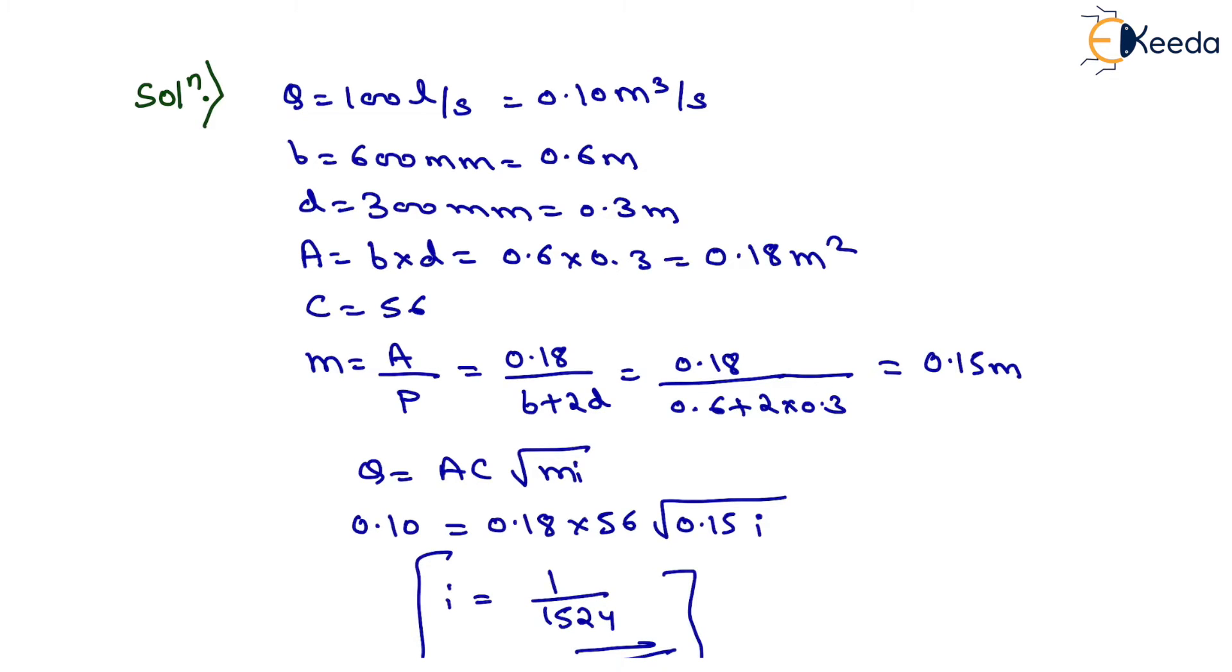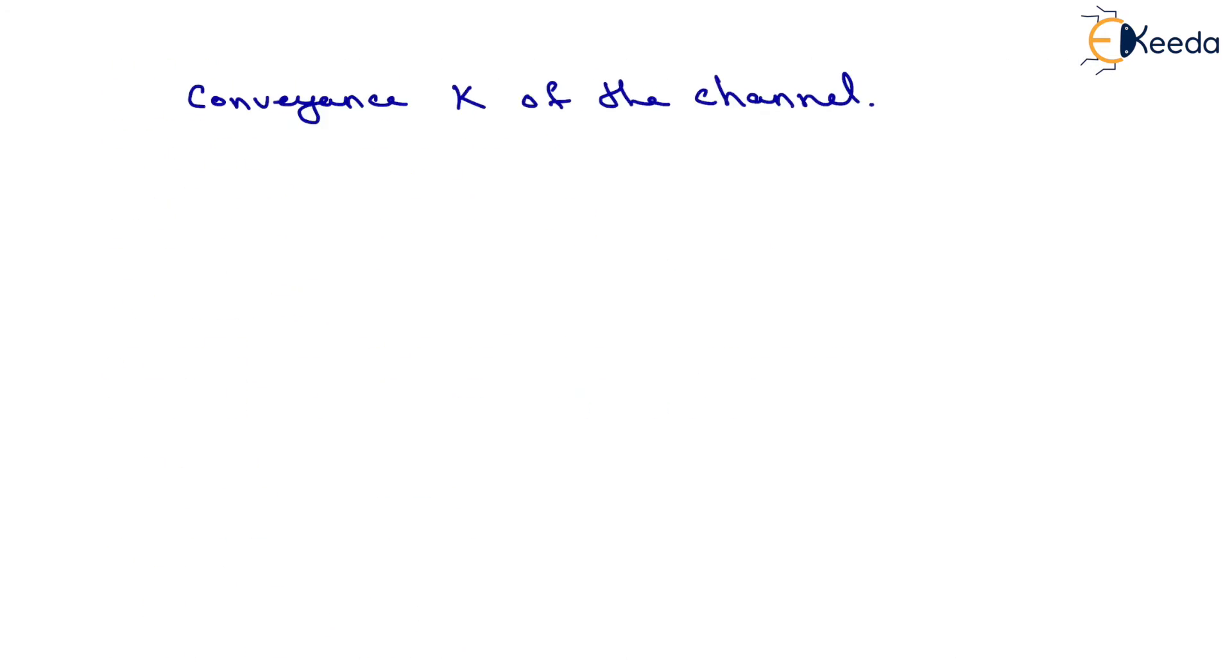Now we determine the value of conveyance K of the channel. We know that Q equals AC times square root of MI, so we can write Q equals K times square root of I. Here, K equals AC times square root of M, which is called the conveyance of the channel section.